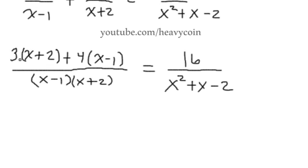And of course we don't want to forget what's over here. Now let's go ahead and distribute this 3 across. We have 3x plus 6 plus 4x minus 4. And that's all over. And I'm going to go ahead and multiply this stuff out down here in the bottom.